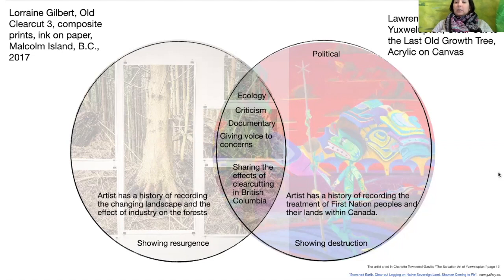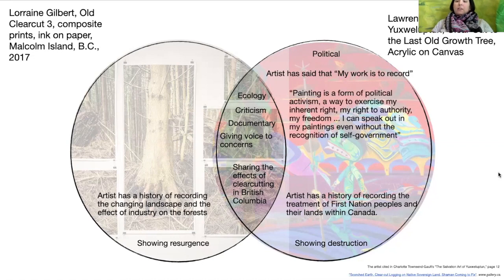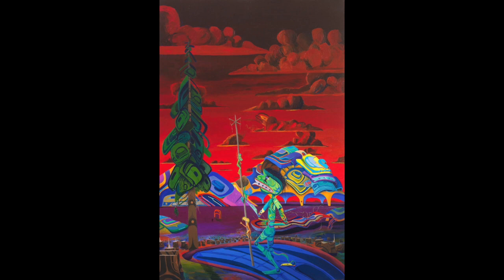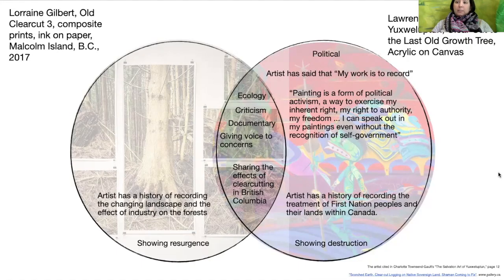Yuxweluptun is very clearly political — he's focusing on the rights of Indigenous people within Canada. The artist has said that his work is to record, which is why it's very much tied to documentary. It might be recording a surrealist landscape version, but he's recording his feelings and emotions about what is happening. He has also said: 'Painting is a form of political activism, a way to exercise my inherent right, my right to authority, my freedom. I can speak out in my paintings, even without the recognition of self-government.' The citations are at the bottom of the slide — you should be doing some in-text citations as you go along. He is trying to speak and give voice to his people through his art, and his works do stand out very strongly.